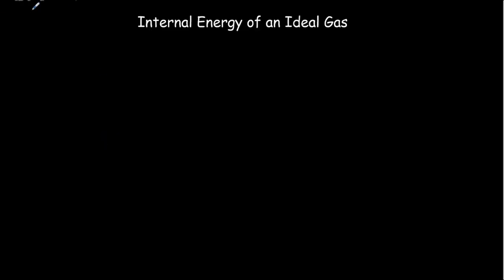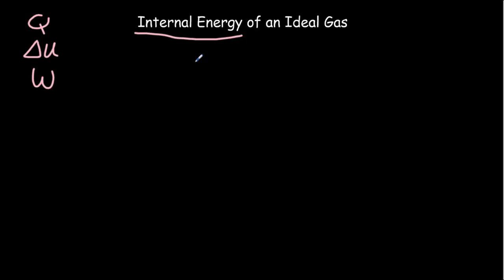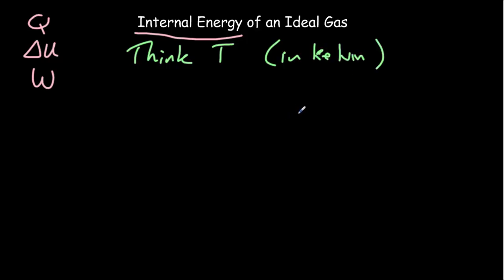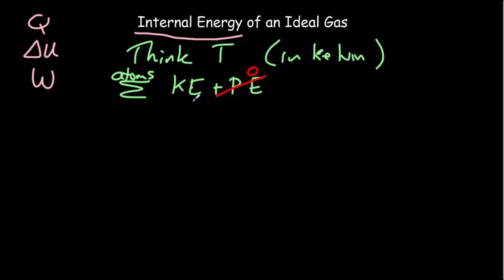In our first law we have three variables: heat, change in internal energy, and work. Let's look at each individually, starting with internal energy of an ideal gas. The big message is: when thinking about internal energy, think temperature in Kelvin. Internal energy is the sum over all atoms of their kinetic energy plus potential energy, but for an ideal gas there's no bonding — no potential energy — so it's just the sum of kinetic energies. And since temperature measures average kinetic energy per molecule, internal energy varies as temperature in Kelvin.